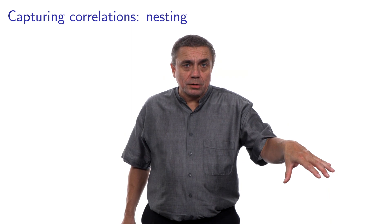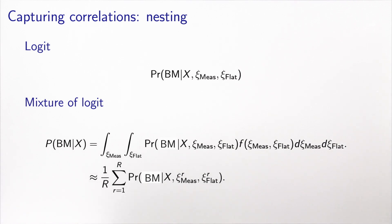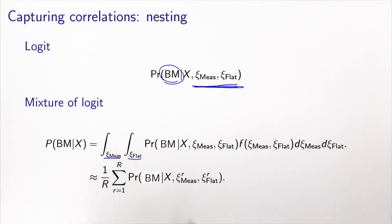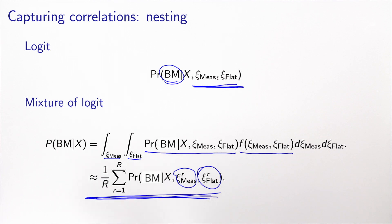Contrary to the nested logit model, here I have assumed that this common error component has a normal distribution, so this is not a nested logit model. Because we have included IID extreme value error terms, conditional on the value of xi, we have a logit model. But since the xi values are not given, we need to integrate over xi measured and xi flat — the conditional probability multiplied by the density of these error components. As discussed previously, these integrals can be approximated using Monte Carlo integration: we generate draws from the two normal distributions and calculate the empirical mean of the logit model for each realization of xi.